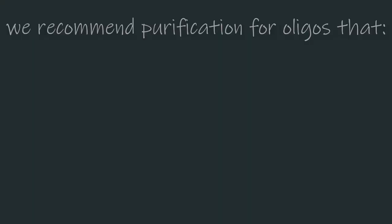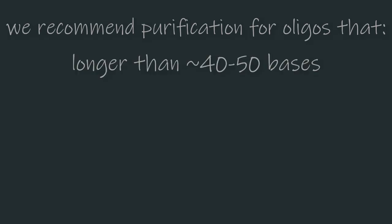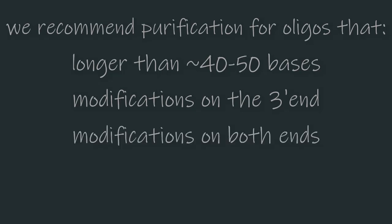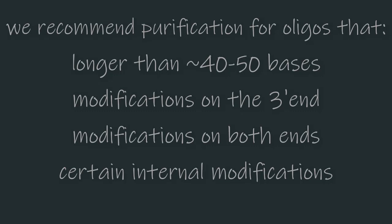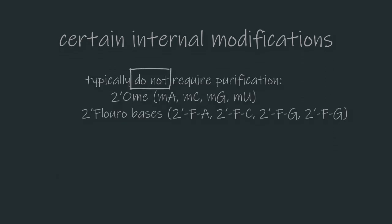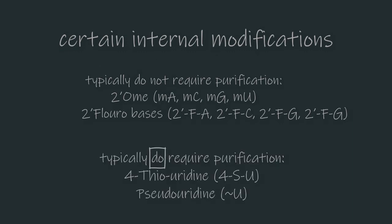Beyond the application, we recommend purification when the oligonucleotide has parameters known to increase the presence of truncated material. This includes oligos longer than about 40 to 50 bases, oligos with modifications on the 3' end, oligos with modifications on both ends, and oligos with certain internal modifications. Some popular modifications, including 2'-O-methyls and 2'-fluorobases, do not require purification. Most other internal modifications often do come with a suggestion of purification — popular examples are 4-thiouridine and pseudouridine.